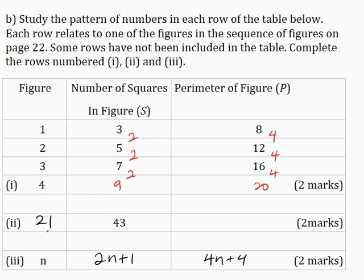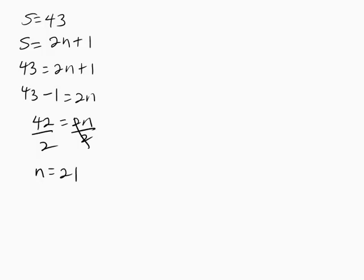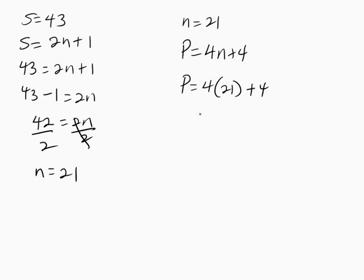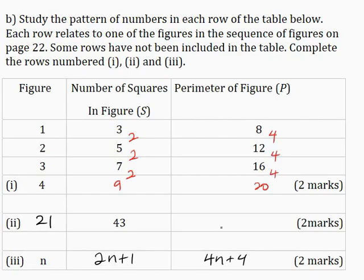Now I will use N = 21 and the formula P = 4N + 4 to solve for the value of P. When N = 21: P = 4 × 21 + 4 = 84 + 4 = 88. I will record this into my table. When N = 21, the perimeter is 88.